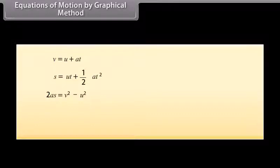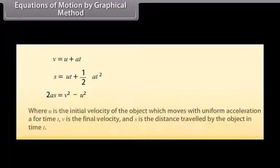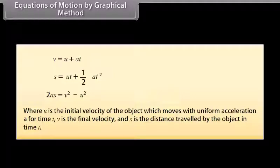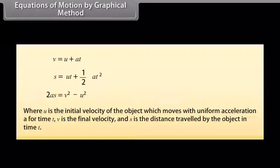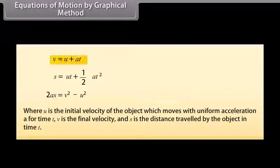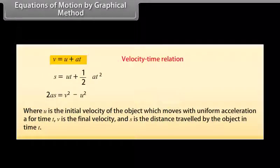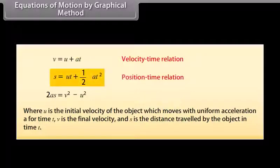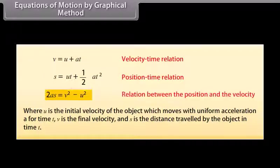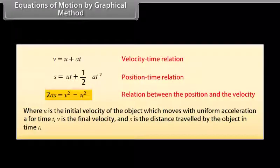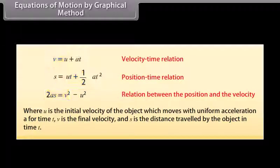Equations of motion by graphical method. The three equations of motion are: (1) V = U + AT, (2) S = UT + ½AT², (3) V² − U² = 2AS. Where U is the initial velocity, A is the uniform acceleration, T is the time, V is the final velocity, and S is the distance travelled. The first equation describes the velocity-time relation, the second the position-time relation, and the third the relation between position and velocity.